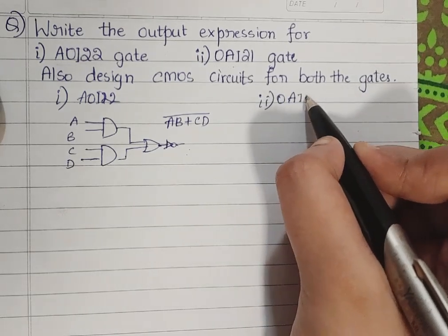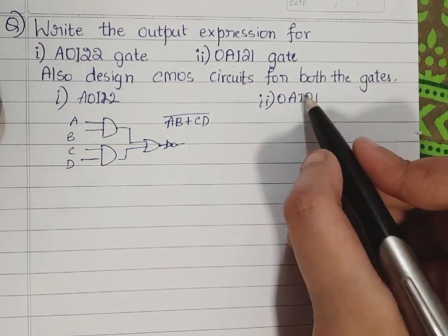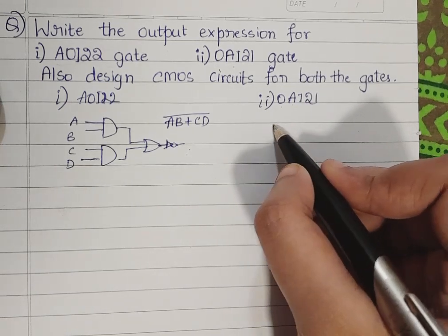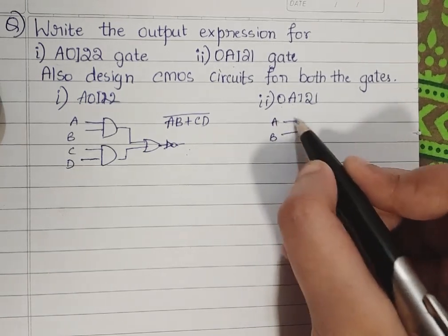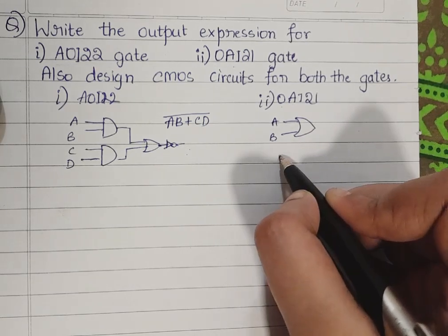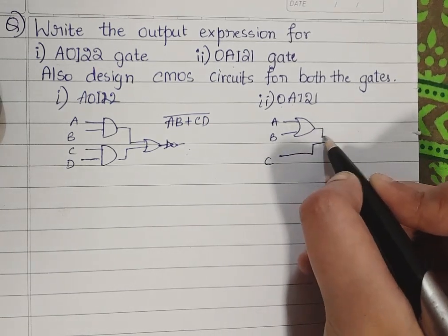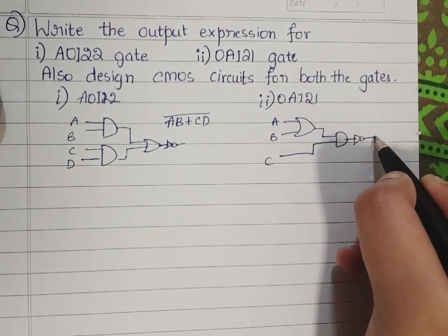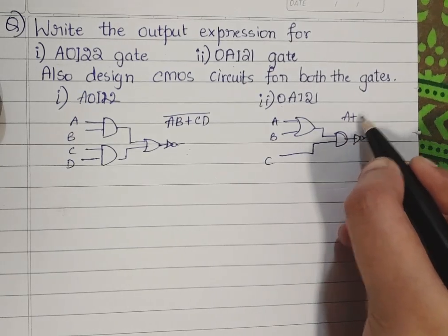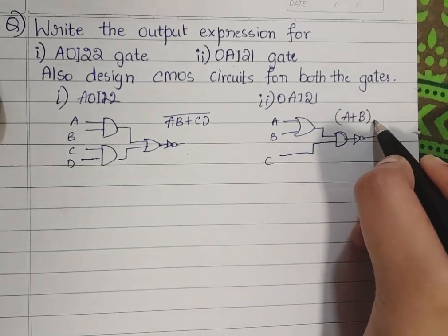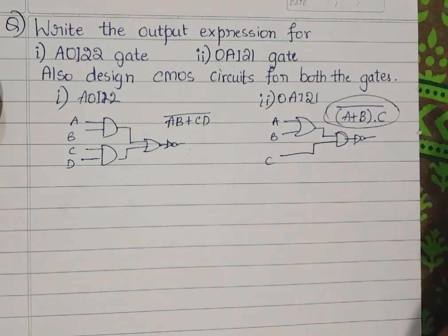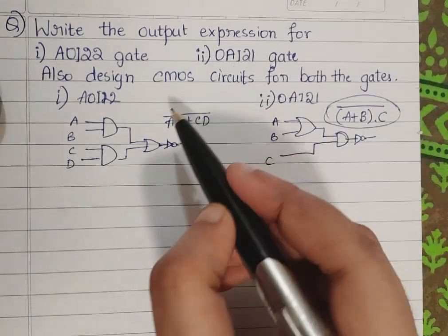Considering the second one, that is the OAI21 gate — it is first OR, then AND, then inverse, two and one. Two inputs AB first go through an OR gate, next through an AND gate with one input C directly. So the expression is: A plus B, into C, whole bar. This is the expression for this gate.